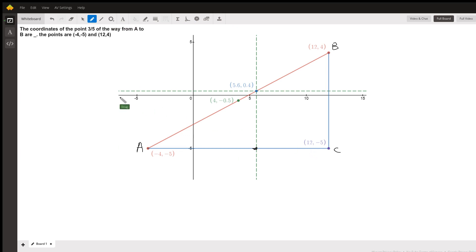So here we go. The distance from A to C is 12 minus negative 4, which is 16. And so three-fifths of that distance is three-fifths of 16. That's how far we want to go in this direction. So where will that take us? Well, it'll take us negative four plus that distance, so we can say plus negative four, and that's what gives us this coordinate right here.